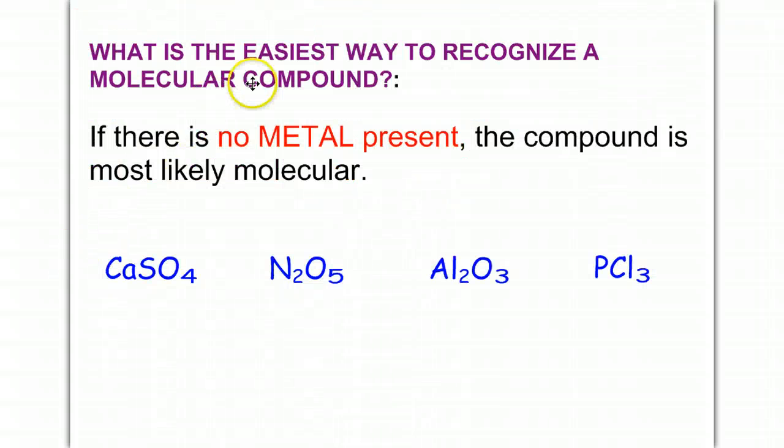What is the easiest way to recognize a molecular compound? If there's no metal present, then the compound is most likely molecular. Of course, there are exceptions to every rule, but this is a good rule of thumb.